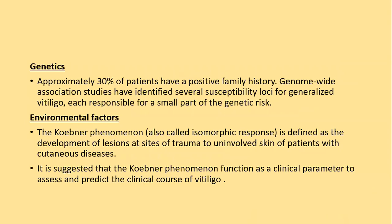Regarding genetics, almost 30 percent of vitiligo patients have a positive family history. Genome-wide association studies have identified several susceptibility loci for generalized vitiligo. Koebner (isomorphic) phenomena — the development of lesions at sites of trauma to uninvolved skin — is a clinical parameter to assess and predict the clinical course of vitiligo. If a patient is developing vitiligo as a result of Koebner phenomena, it shows the disease is still active.